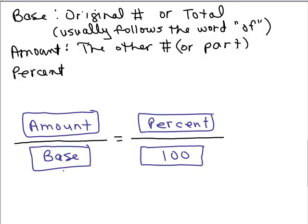So here's a setup for solving a problem using proportions. We have what's called the base. That's our original number or our total. In our problem, that will be the total number of students normally in the class. And the amount, in this case we're talking how many were absent, so it's the other number. And I'm going to put or part. I'm careful of this because sometimes the amount might be bigger than the original number, so be careful. It's not always smaller.